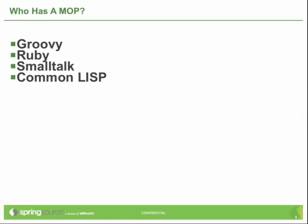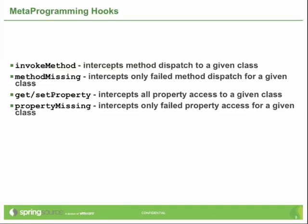Groovy is not the only language that supports a MOP. Languages like Groovy, Ruby, Smalltalk, and CommonLisp all support some form of MOP. We're going to be exploring Groovy's implementation and get a sense for how a lot of this works. One part of Groovy's dynamic dispatch mechanism includes these metaprogramming hooks, which are special methods called invokeMethod, methodMissing, getProperty, setProperty, and propertyMissing. Those are all special methods that participate in method dispatch within the Groovy programming language.